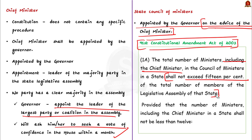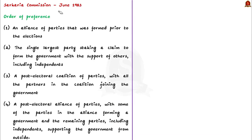There are no specific guidelines in the constitution on what the governor should do in situations where there is a face-off between parties on coalition alleys. In such instances, the recommendations of the Sarkaria Commission set up in June 1983 act as the guiding principle. According to it, in situations where no single party has obtained an absolute majority, the governor should make decisions based on the order of preferences as shown in the slide. These are very important points from the mains point of view, and you can access these from the PDF provided in the description box.